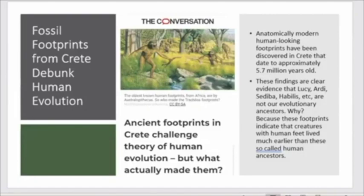This negates all dating methods because we've got fossil footprints—anatomically modern human-looking footprints that debunk human evolution—in the same layers or lower than the australopithecines. Anatomically modern human-looking footprints have been discovered in Crete, I believe it's in Greece. They date approximately to 5.7 million years old.